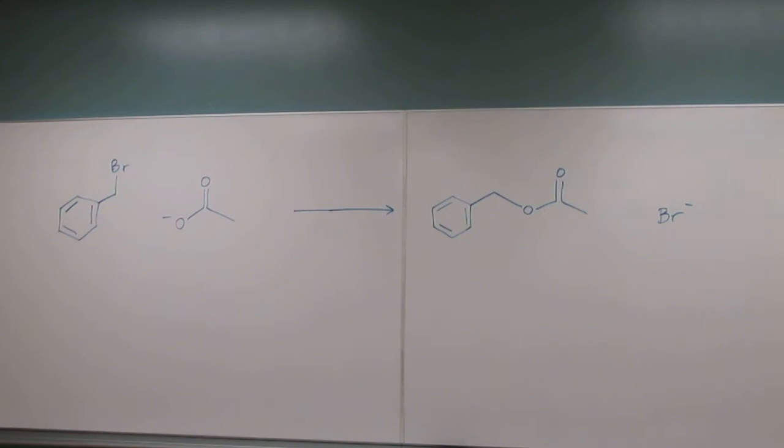Okay, so let's try this problem. It's actually a mechanism problem. It says add curved arrows to the following polar reaction mechanism to indicate the flow of electrons in the reaction. So what does it mean, polar reaction? Can anybody tell me?